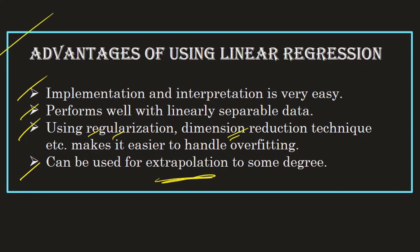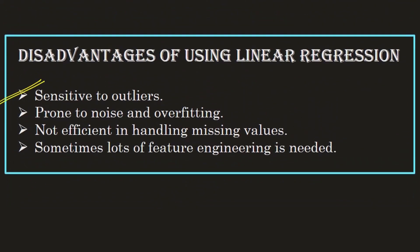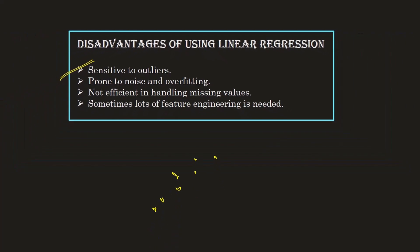Now let's look at the disadvantages. First, it is sensitive to outliers. If you have some observations and a clean best fit line, but then you add an outlier or two, your entire model will try to shift the straight line just to avoid the loss with respect to those outlier data points, which leads to mispredicting other values. It is very important to get rid of outliers before applying linear regression.